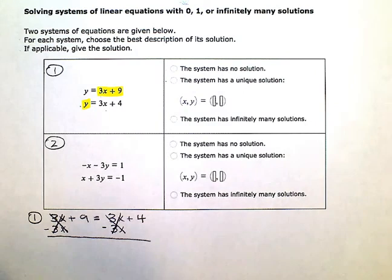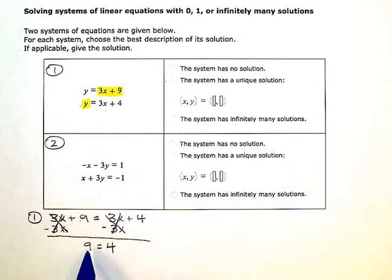But I am left with a 9 on the left and a 4 on the right. Now if I look at what I'm left with, 9 equals 4 is a false statement. That's not true. 9 doesn't equal 4.